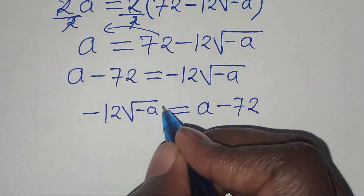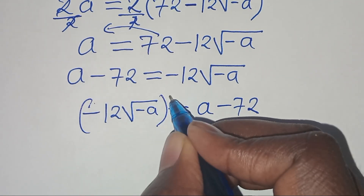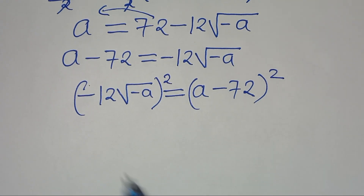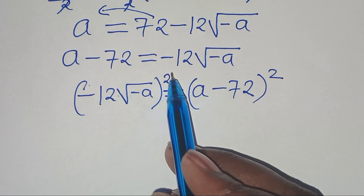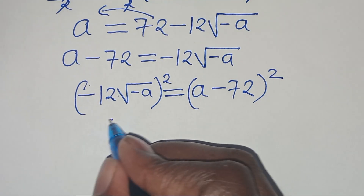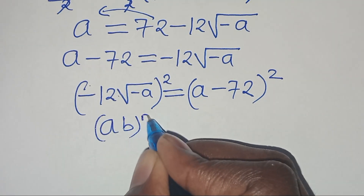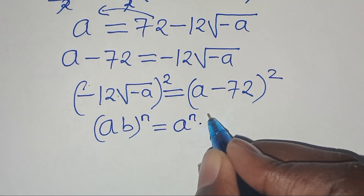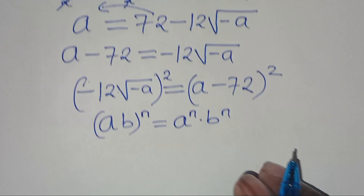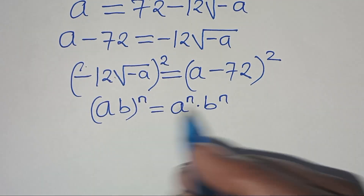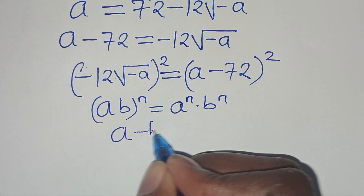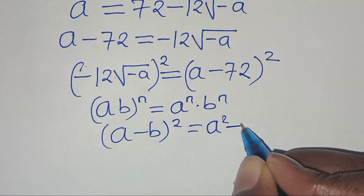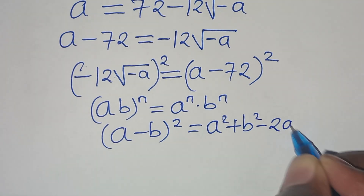The next step is to square both sides again. We have (−12·√(−a))² on the left, which is in the form (a·b)ⁿ = aⁿ·bⁿ. On the right, (a − 72)² is in the form (a − b)² = a² + b² − 2ab.